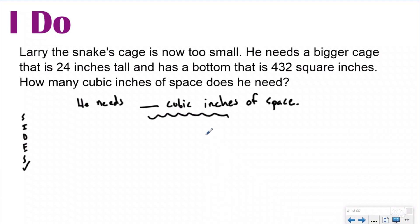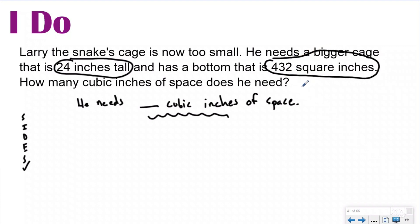Volume is cubic units, so I'm going to go back and look for any information that helps us figure out the volume. He needs a bigger cage that is 24 inches tall — 'tall' is another way of telling us that's the height. And it has a bottom that is 432 square inches. I know that this is the area of my base — I'm annotating that because it said 'bottom' which is like 'base,' and because it was square units, I know that is the area.